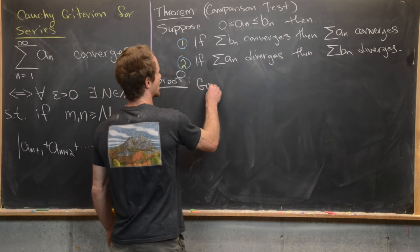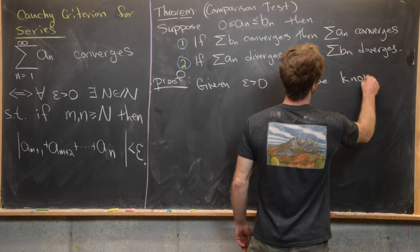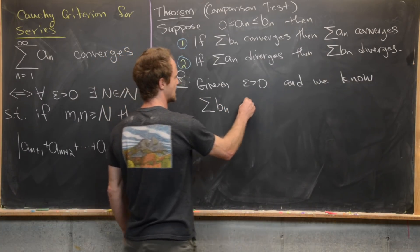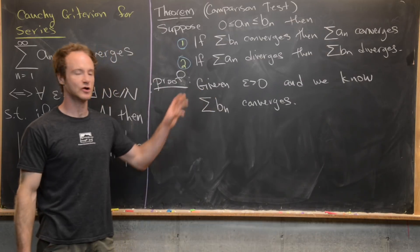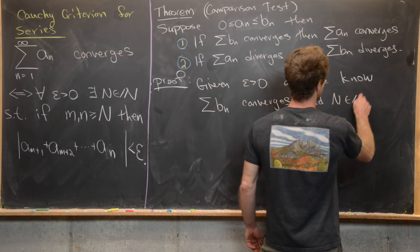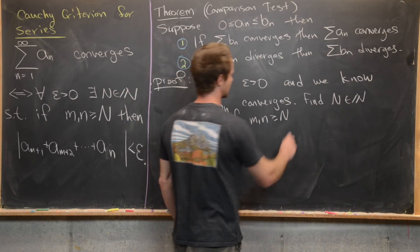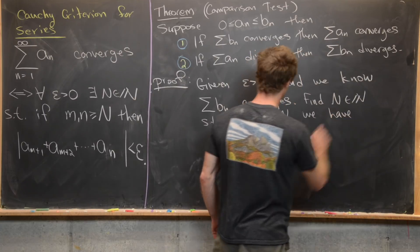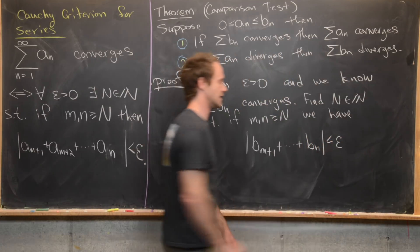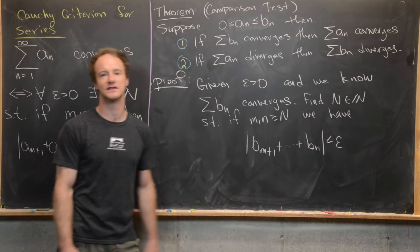Given epsilon > 0, we know that the sum of b_n converges. We'll use the Cauchy criterion on the convergence of b_n to find some capital N in the natural numbers such that if m and n are both ≥ N, we have the sum b_{m+1} + ... + b_n less than epsilon. That setup is guaranteed by the Cauchy criterion applied to the series b_n.